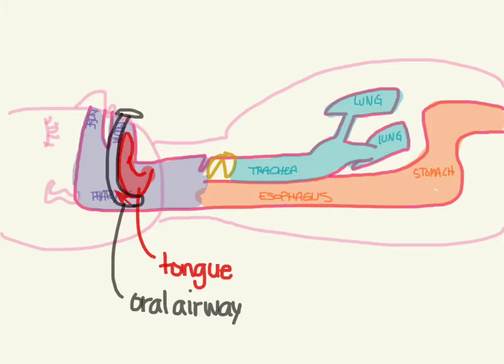The oral airway is a hard plastic piece that comes back and lifts the tongue off the back of the hypopharynx. You have to be sure to use one that's properly sized. If too small, it might not reach far enough back or may even push the tongue back further. If too big, it itself may obstruct the airway.